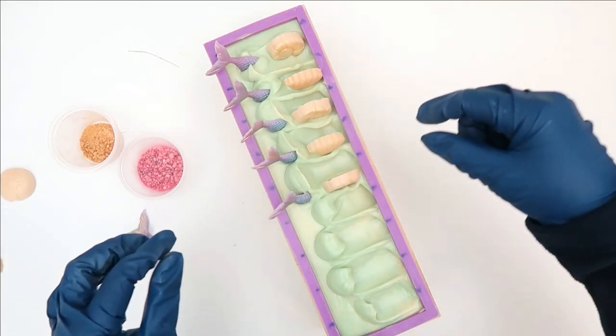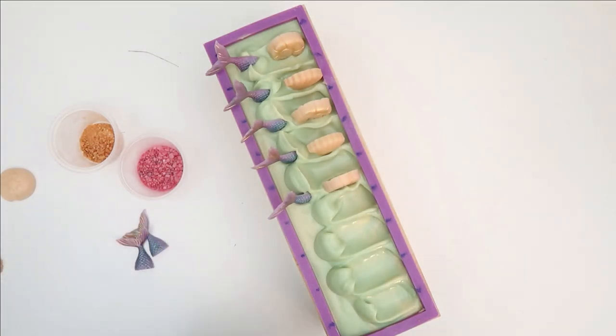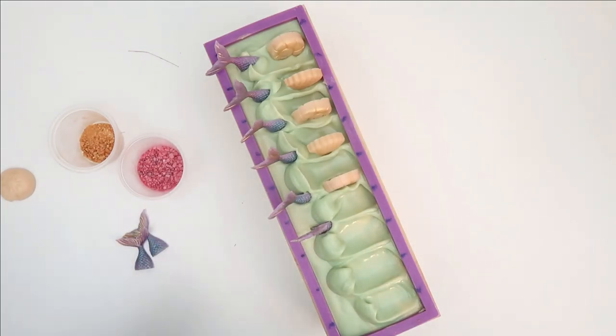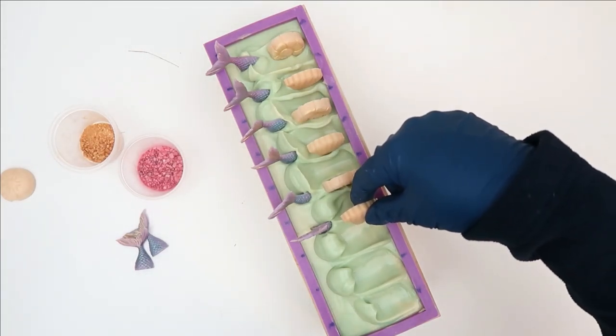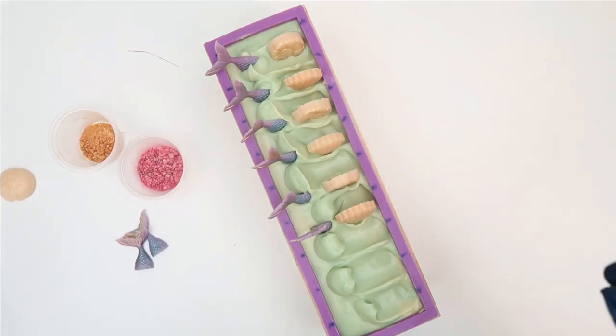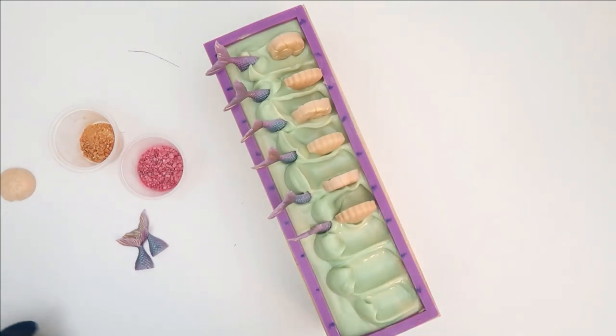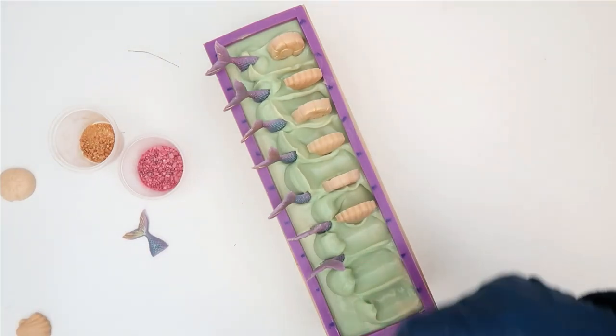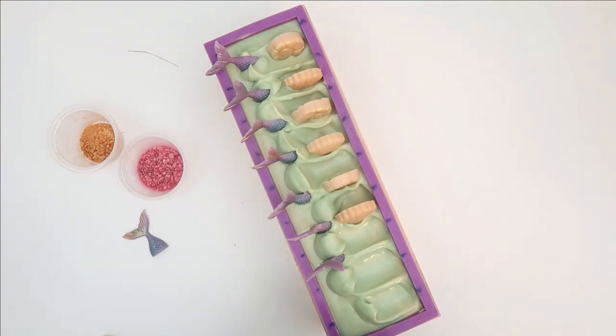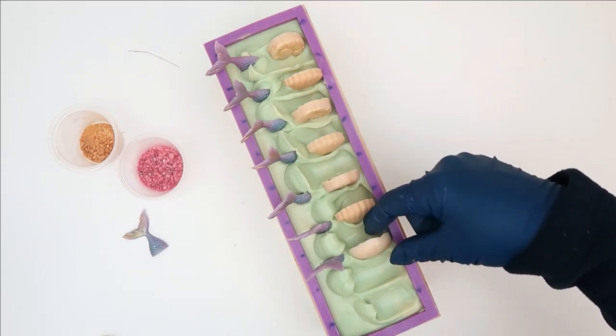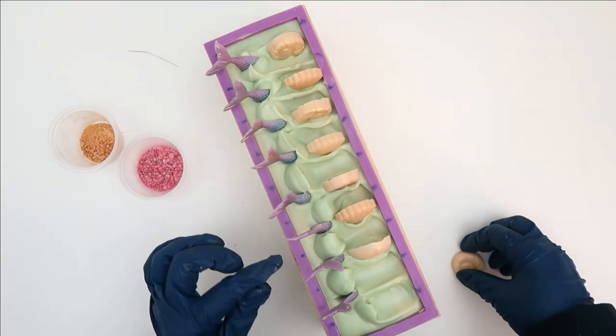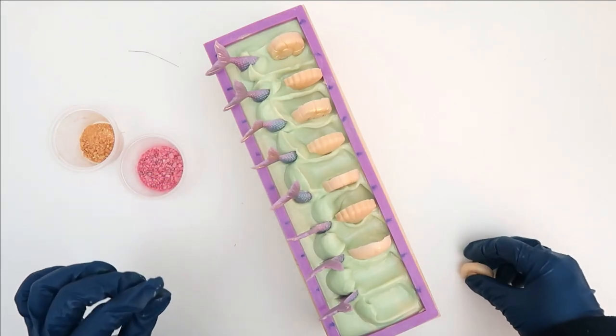The only problem I have with that mold is that I feel the tail in this part is too thin and I am so scared thinking that people are going to break it. So I guess I'll just have one soap out for demonstration so they can see it, and then I'll keep the rest in the back just in case, because I know there will be a lot of little girls that will love the soap and of course they will want to touch it.